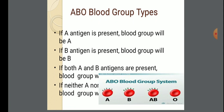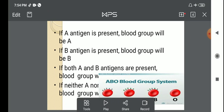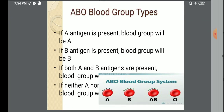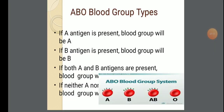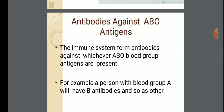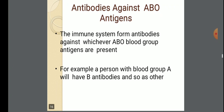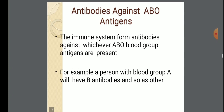In ABO blood group types: if A antigen is present, blood group will be A. If B antigen is present, blood group will be B. If both A and B antigens are present, blood group will be AB. If neither A nor B antigen is present, the blood group will be O. The immune system forms antibodies against whichever ABO blood group antigens are absent. For example, a person with blood group A will have anti-B antibodies, and a person with blood group B will have anti-A antibodies.